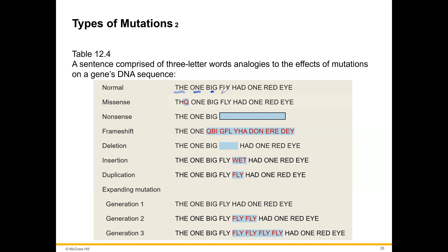The analogy uses a sentence where each word is made of three letters — eight words total, each three letters long. This represents how ribosomes read information in messenger RNA in words of three letters. The example sentence is: 'the one big fly had one red eye.' By making changes to this code, you end up with different types of mutations.